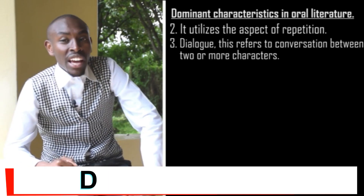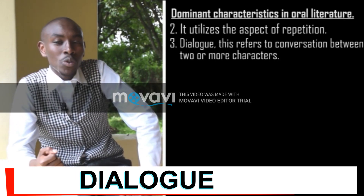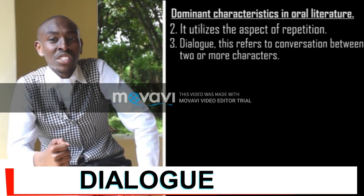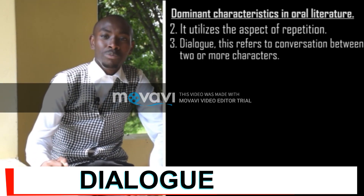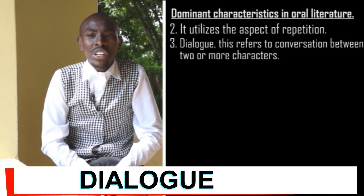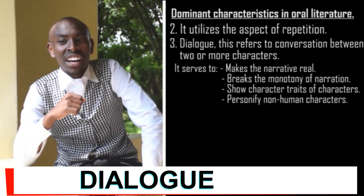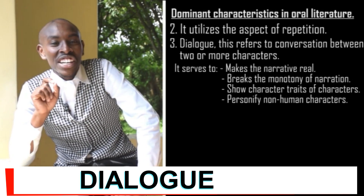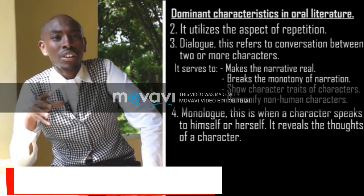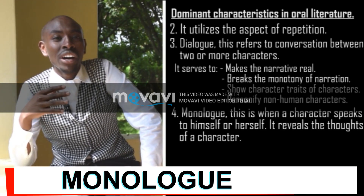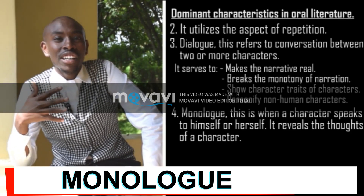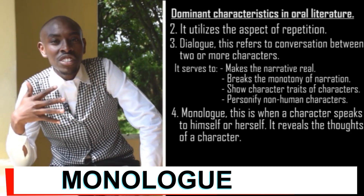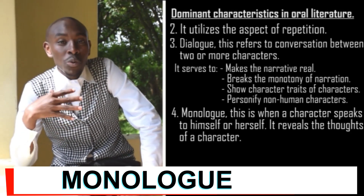Number three is the use of dialogue. Dialogue is the conversation between two or more characters. The dialogue is there to make the narrative real and to break the monotony of narration. One use of dialogue is to help us understand the character traits. Dialogue also personifies the characters. We also have the use of a monologue, where a character speaks to himself. The monologue gives us a better gist of the story, or it helps us to understand the story better.